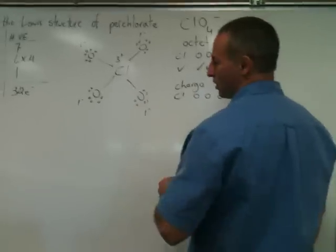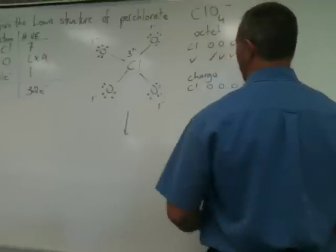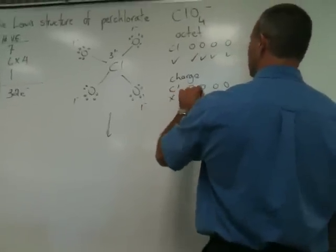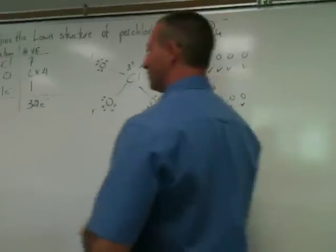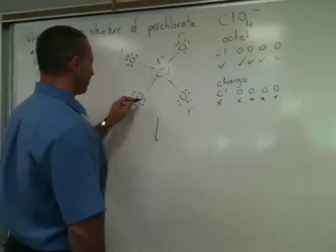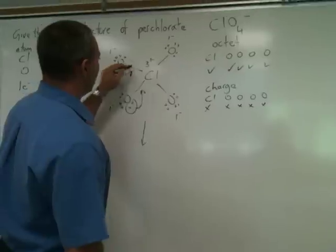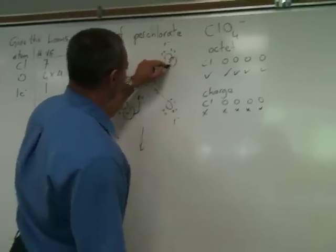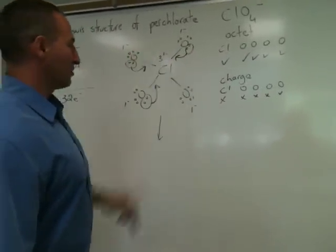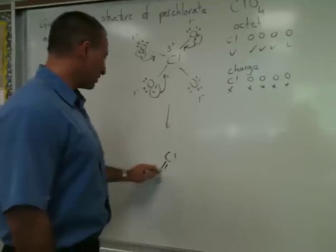But that's too many formal charges in one molecule. So let's refine it by moving some of the lone pairs in and turning them into bonding pairs. We'll do that three times — that's going to take care of the plus three on chlorine.